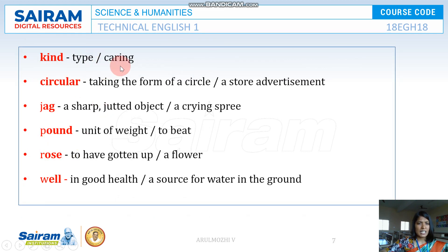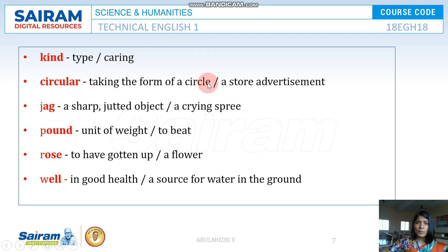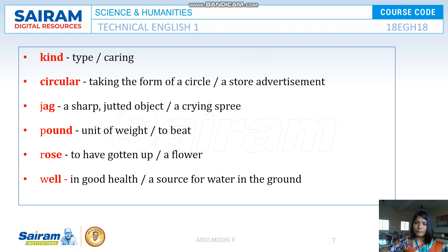KIND can mean caring and gentle, as in 'she is very kind,' or a type, as in 'what kind of letter is this?' CIRCULAR can mean taking the form of a circle, like circular motion, or it can refer to a store advertisement or official announcement passed out by management.